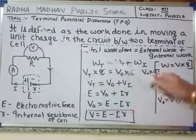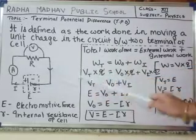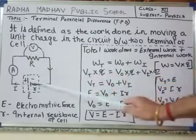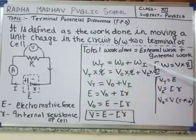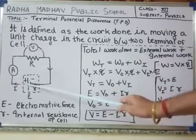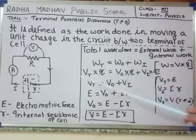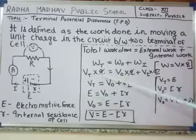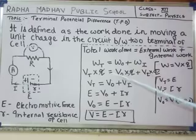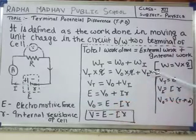Total work done — external plus internal — is equal to work done outside across the cell from positive to negative terminal, plus work done inside the cell across the liquid electrolyte. Here W equals V into Q, so V is the total complete potential difference into Q. V_O is the terminal potential difference (TPD) into Q, plus V_I, the internal drop, into Q.